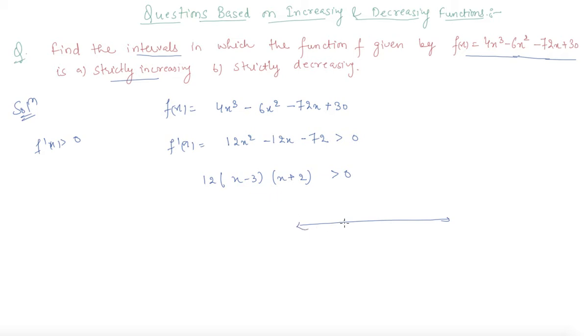This is the number line where -2 and 3 are plotted. If you will check where the function is strictly increasing or decreasing, for function to be increasing, if I put the value here, the function will be increasing, positive sign. But in this interval, -2 to 3, it is negative and it is again increasing here.